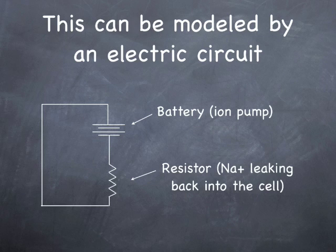Now this can be modeled by an electric circuit. I'm going to use some really hairy electrical engineering symbols now. So the horizontal lines there are the symbol for a battery, and this is like the ion pump. The ion pump is like pumping out these ions.